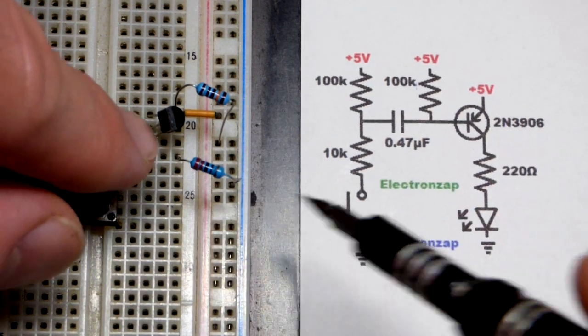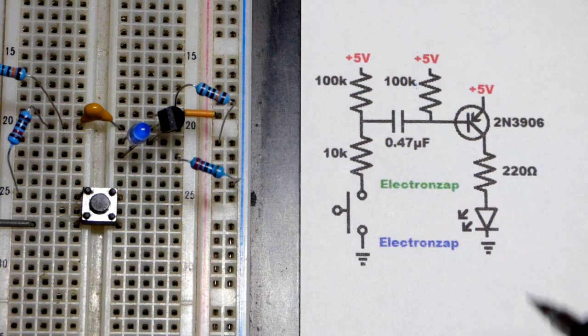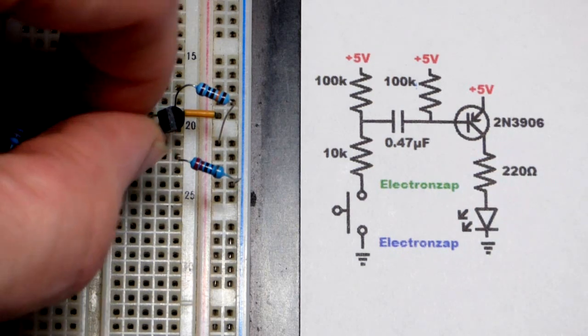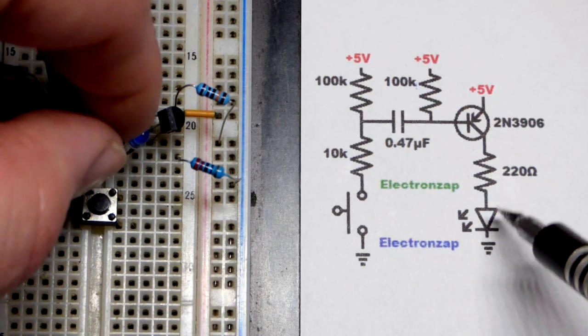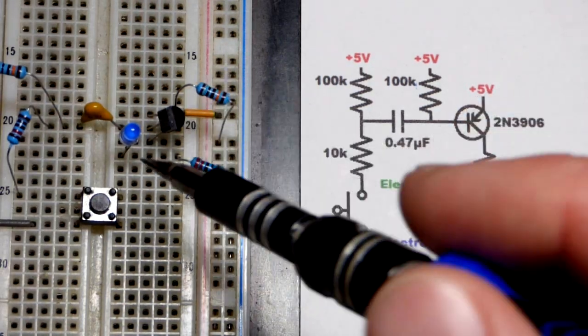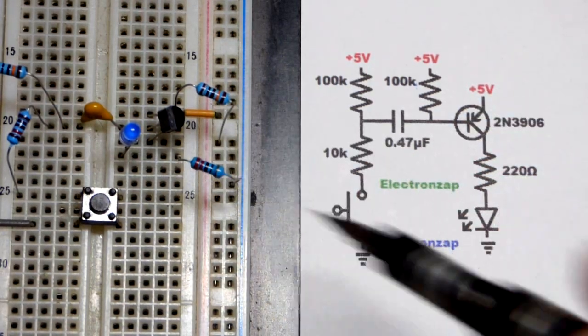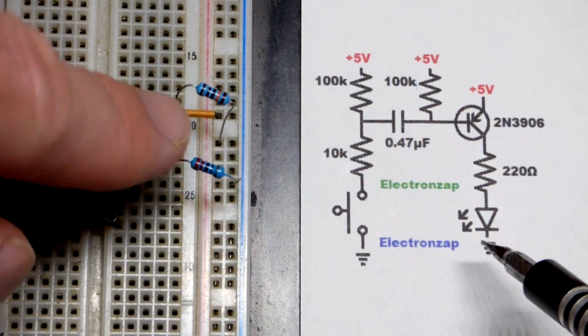Then collector, LED, and then a 220 ohm resistor. Order doesn't matter when they're in series. As long as the LED is in the right direction where the anode, the longer lead, is more positive and the short lead, the cathode, is more negative.